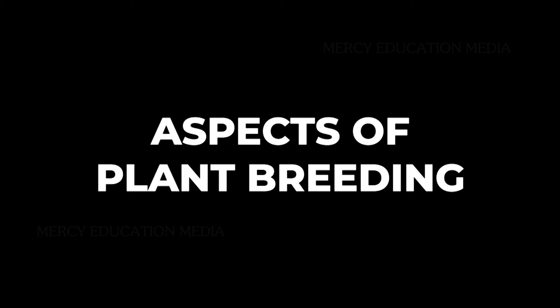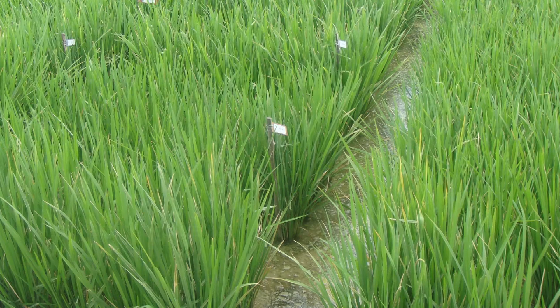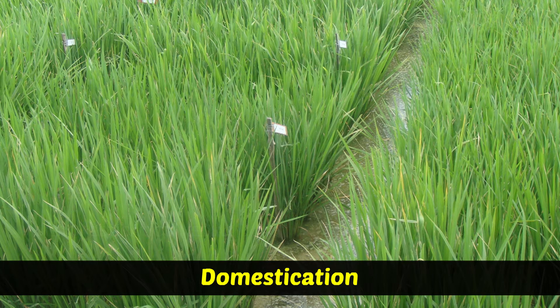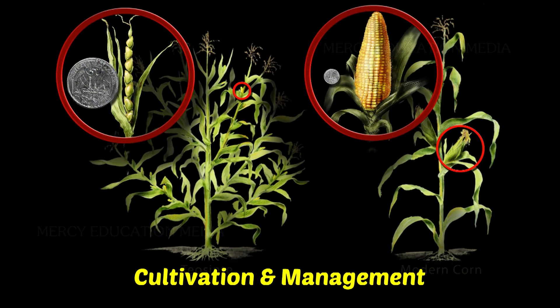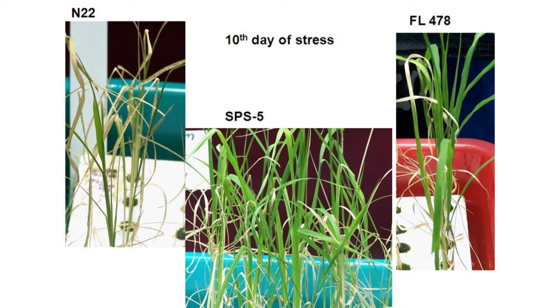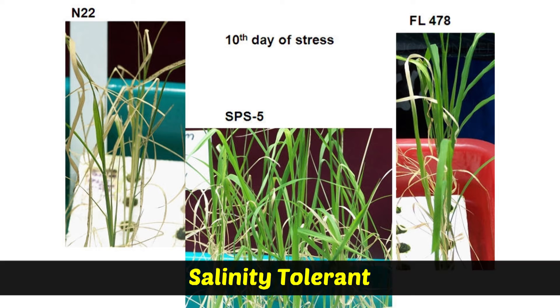What are the special aspects of plant breeding? The present-day crop plants are from wild species reared by careful domestication, cultivation, and management. We have several wild varieties existing in nature, just as in the case of salinity-tolerant wild rice.